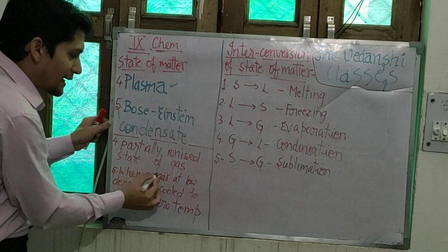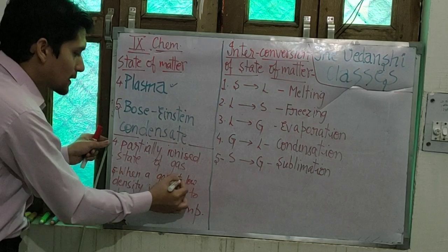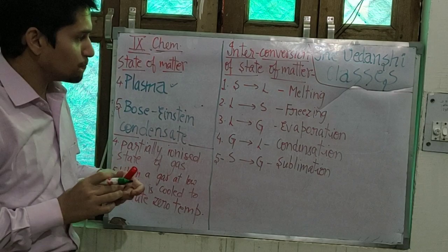Next, Bose-Einstein condensate. That means when a gas at low density is cooled to absolute zero temperature — even below absolute zero — the gas condenses. This state is called Bose-Einstein condensate.